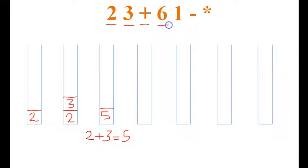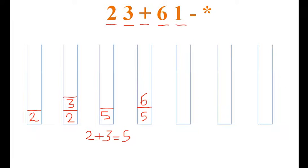The next element is 6 — it is an operand — so we push it on the stack after 5. The next element is 1, which is also an operand, so I will push it on the stack after 6. Now 1 becomes the topmost element.